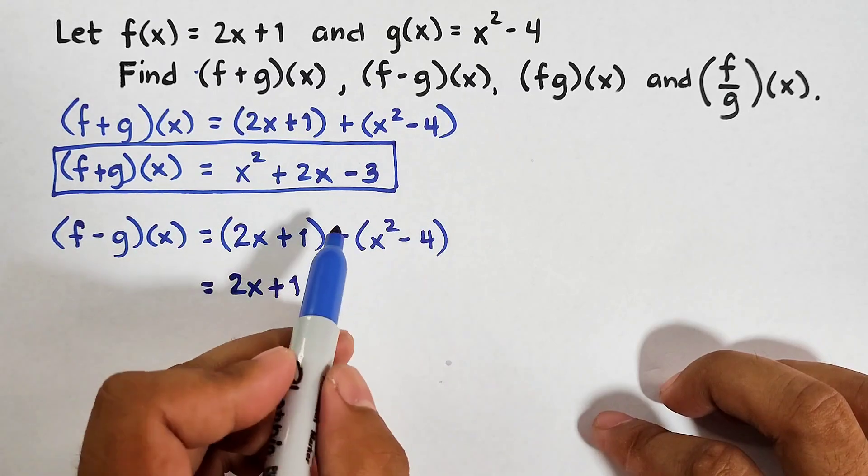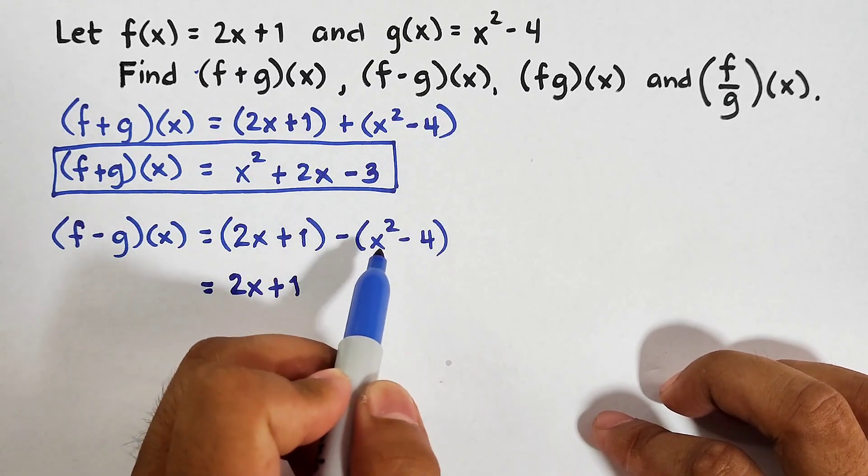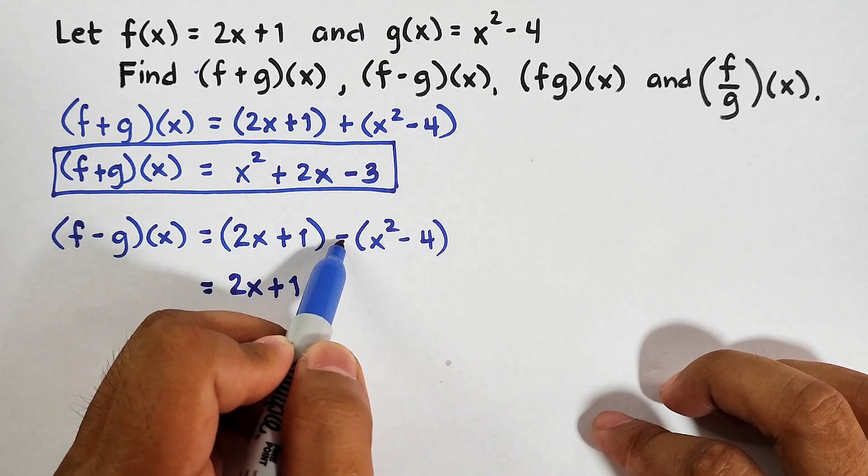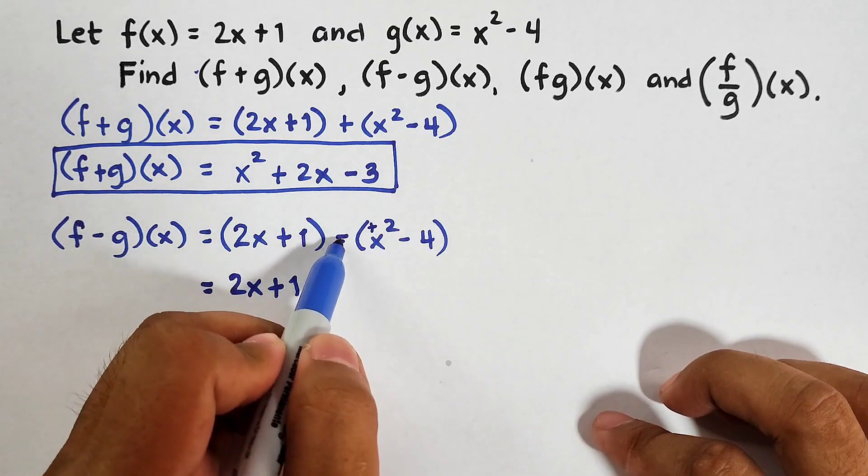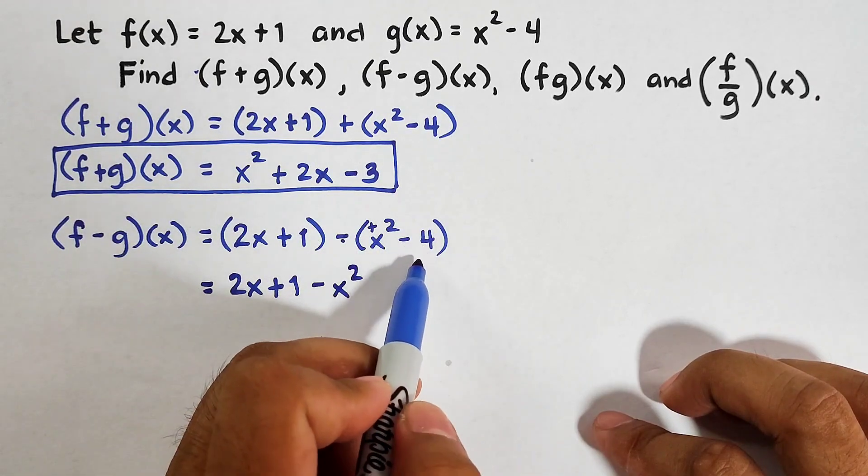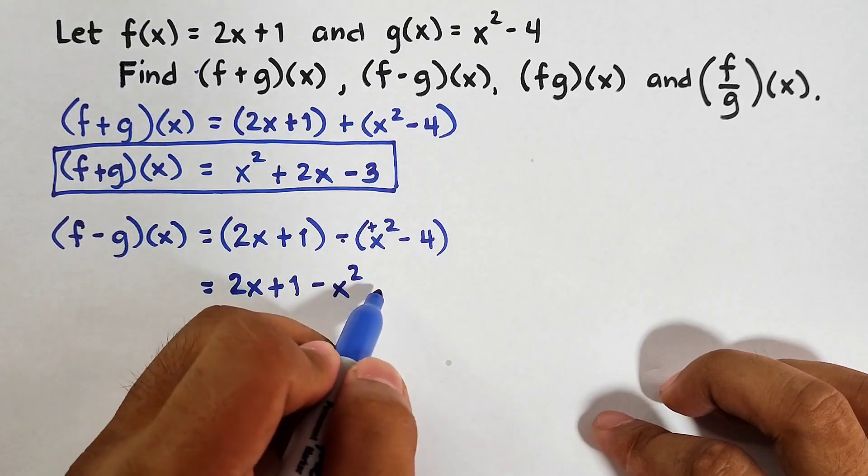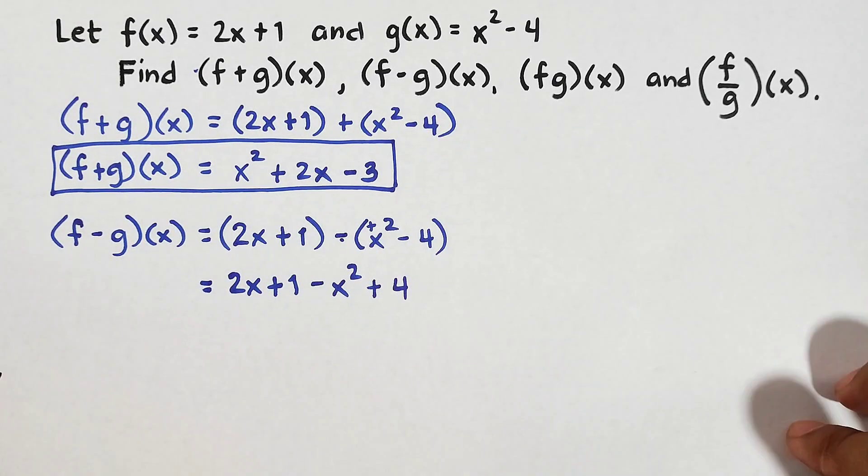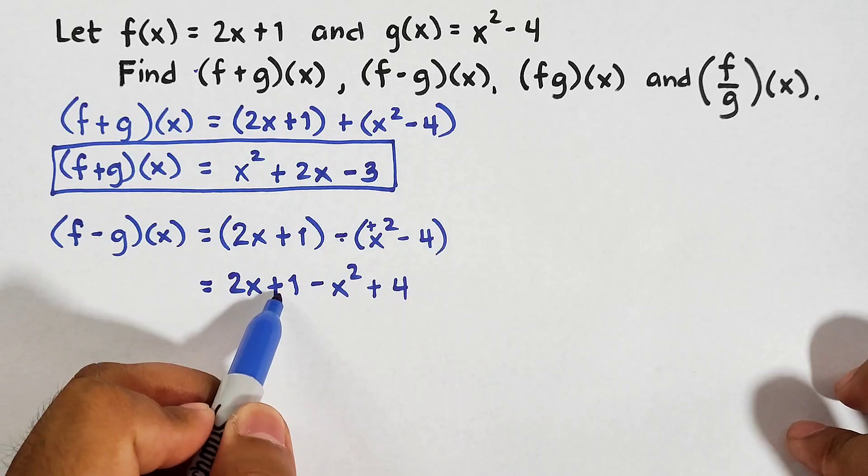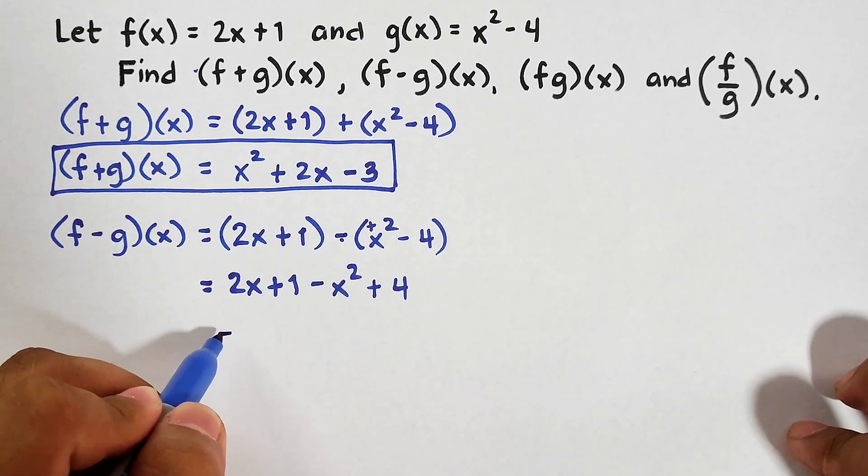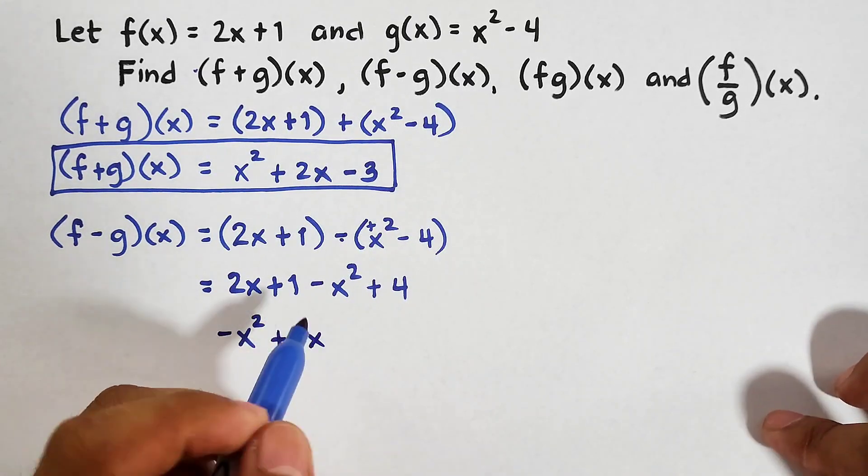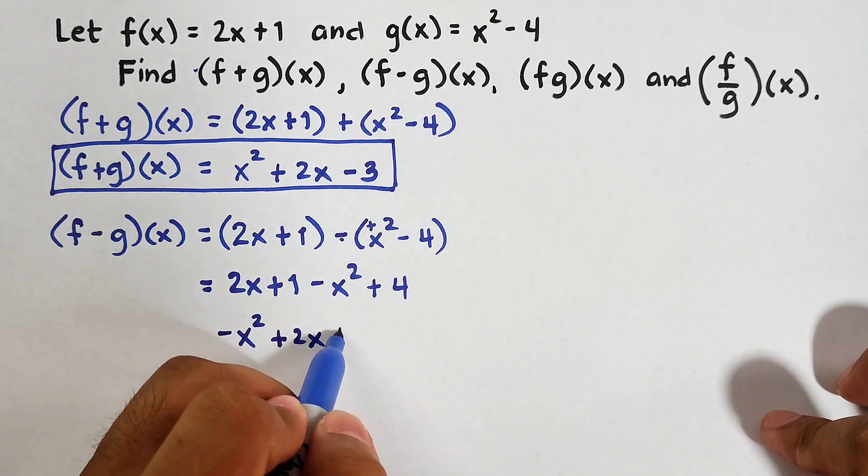While here in our function g, since we have here negative, we will change the signs of each term. We'll multiply this negative sign on the outside. Since this is positive and this one is negative, negative times positive is negative, so this will be -x². Here with our negative 4, negative times negative is positive, and then we have 4. We're not yet done because we still need to arrange the terms of this operation and we will combine 1 and 4. First, we will copy -x², this must be the first term. Then this one plus 2x. Then for the constants, we have 1 + 4 that is equal to 5.